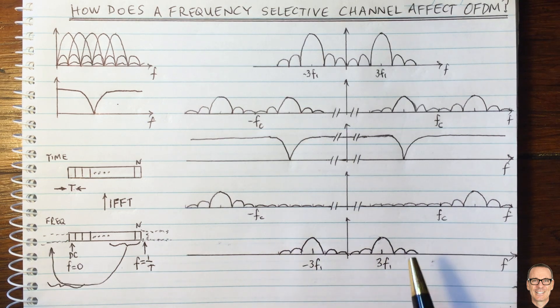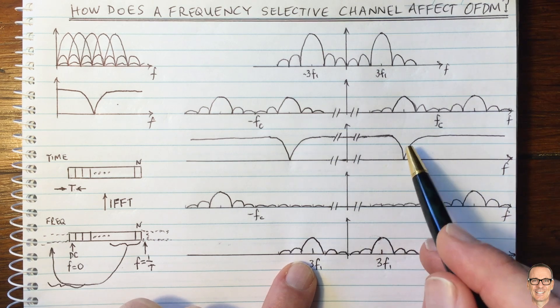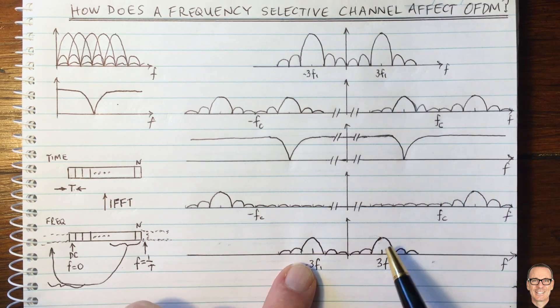They add up, of course. And this is the resultant signal that you'll get at the receiver. So this notch has affected that subcarrier.